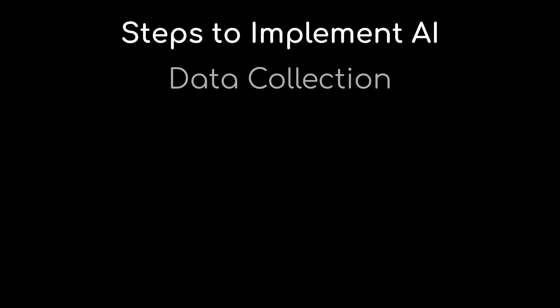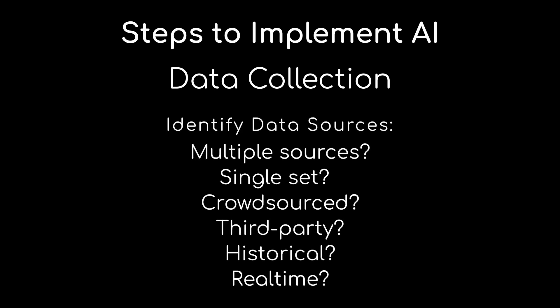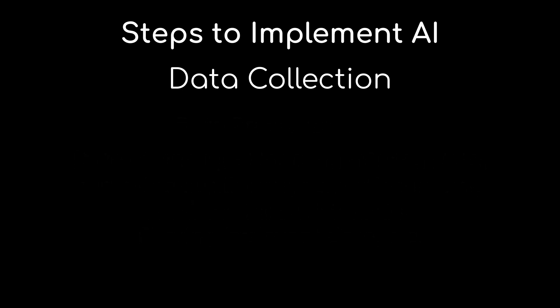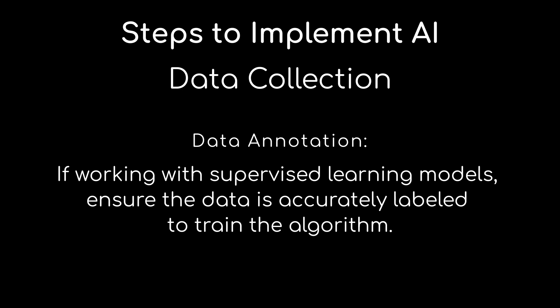Step two: data collection. There could be numerous data sources, or you could have a single dataset — it all depends on what you're trying to do and what those outcomes look like. You should know what data sources you're going to need to develop your solution. We're also going to do data pre-processing — things like data cleansing, looking for missing data, making sure our data is reasonably accurate, and bringing it together in a usable fashion. We'll also look at data annotation, so if you're working with a supervised learning model, ensure the data is accurately labeled to train the algorithm.